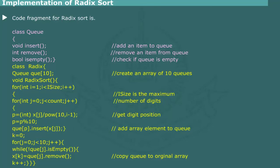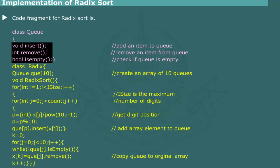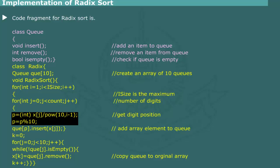Implementation of Radix Sort: The code contains two classes — Q and Radix. The constant iSize defines the maximum number and total number of passes. Class Q includes three methods: insert, remove, and isEmpty. Class Radix implements the sort method using an array of queues named QUE to serve as bins. In essence, P determines the integer value in x[j] for the i-th pass; accordingly, x[j] is moved to QUE[P].